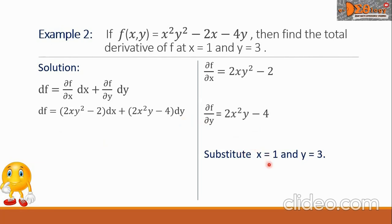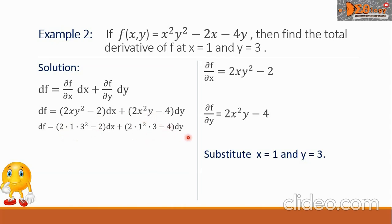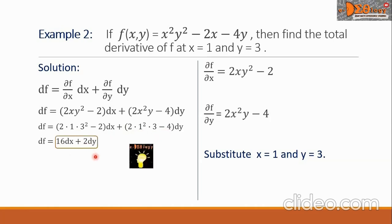We substitute x equals 1 and y equals 3. The term 2xy squared becomes 2 times 1 times 3 squared, minus 2. The term 2x squared y becomes 2 times 1 squared times 3, minus 4. Simplifying: 3 squared is 9, times 2 is 18, minus 2 is 16. So we have 16 dx. Then 2 times 1 squared is 2, times 3 is 6, minus 4 is 2. So we write 2 dy. The final answer is 16 dx plus 2 dy.